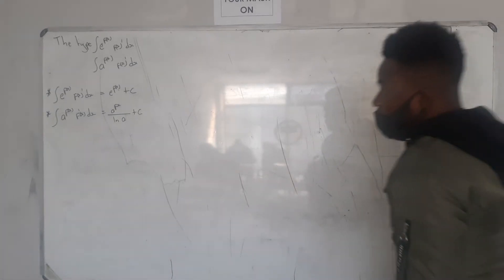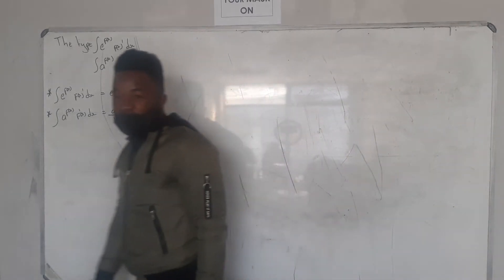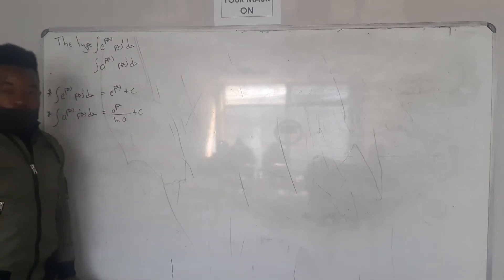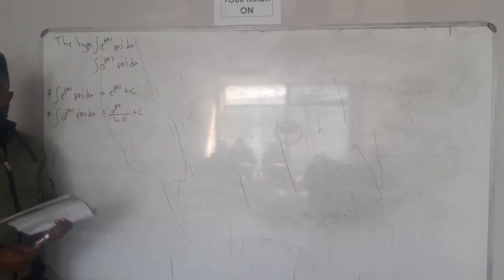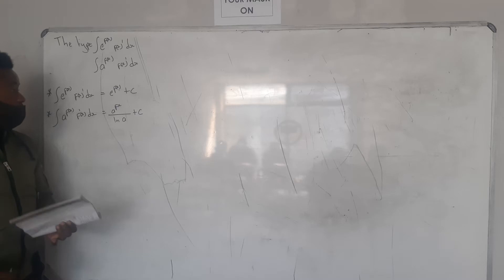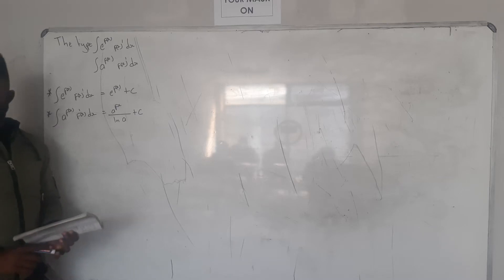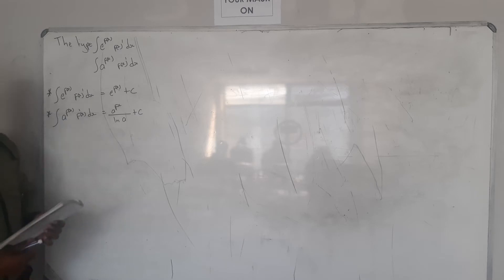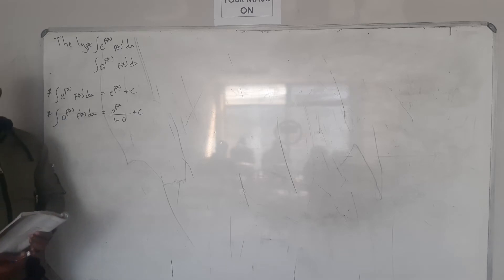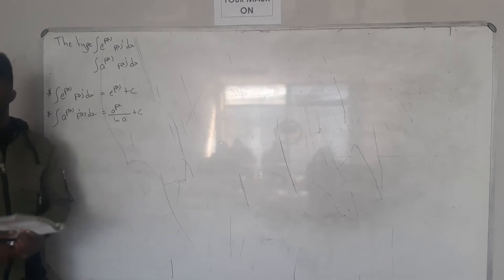Okay guys, let's also do a different type, besides type one and type two. Alright, okay guys. So, besides type one and type two, they can also give you the E type and also the A type. So you have different types, and remember, I said the one measure in which type you are supposed to be using.